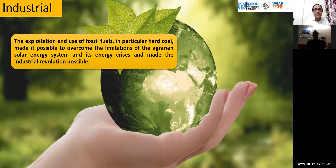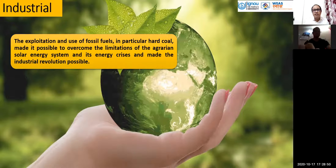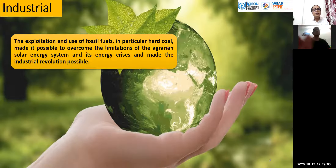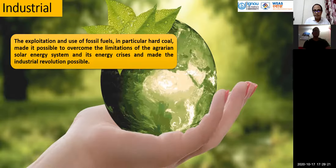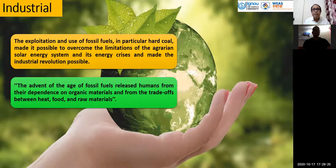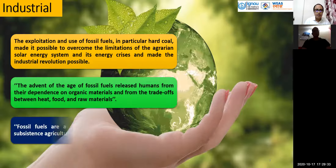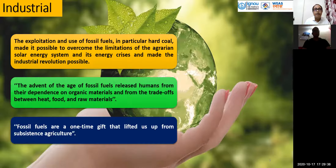To find an alternative to meet their energy demand, we shifted to the industrial epoch. In the industrial epoch, the exploitation and use of fossil fuels — particularly hard coal — made it possible to overcome the limitations of the agrarian solar energy system. The advent of fossil fuels released humans from their dependence on organic materials and from the threats of heat, food, and raw material shortages. Fossil fuels were a one-time gift that lifted us from subsistence agriculture.